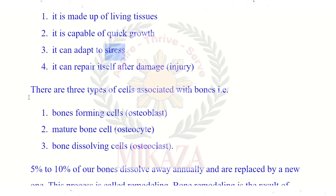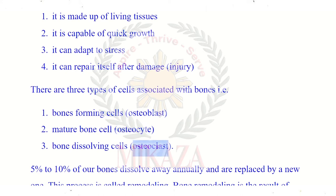There are three types of cells associated with bones. Number one: bone-forming cells, known as osteoblasts — these are the cells that form bones. Mature bone cells are known as osteocytes. And bone-dissolving cells are known as osteoclasts. So we have three types of cells: osteoblasts that build bones, osteocytes which are the mature form, and osteoclasts that dissolve bones.